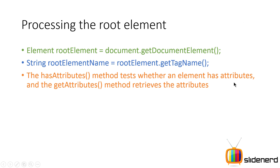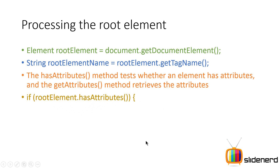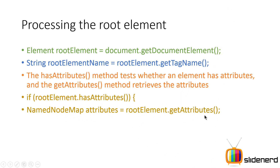There is a method called hasAttributes() that checks whether this element has attributes or not. Based on that, you're welcome to call getAttributes(), which will return or retrieve the list of attributes. So if rootElement.hasAttributes() is true, you can say rootElement.getAttributes(). What this returns is a NamedNodeMap, and we will take a look at how to process this NamedNodeMap.